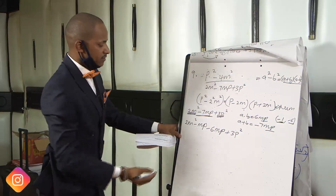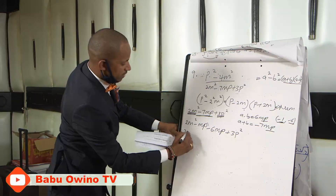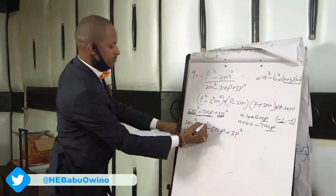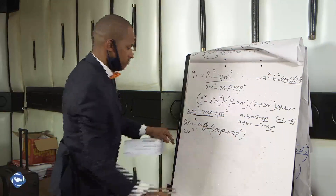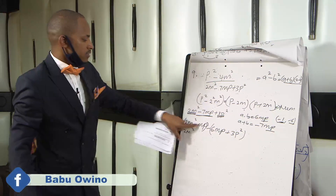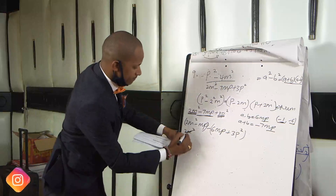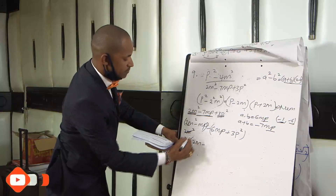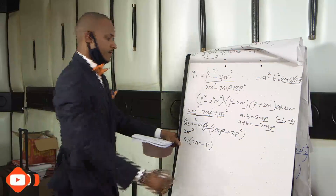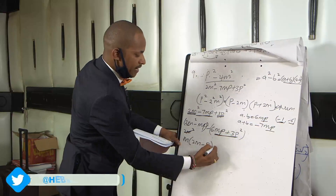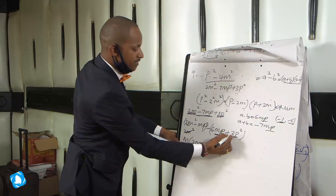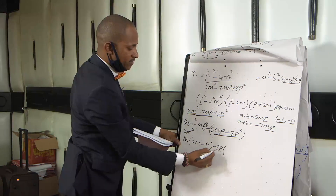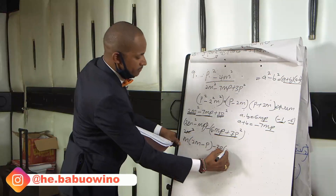Then you simplify this by collecting like terms. So from 2m squared minus mp, what is common is m. M goes into 2m squared, 2m times; m goes into mp, p times. Then what is common between minus 6mp and 3p squared is minus 3p. So 3p goes into 6mp, 2m times, and 3p goes into 3p squared, p times.